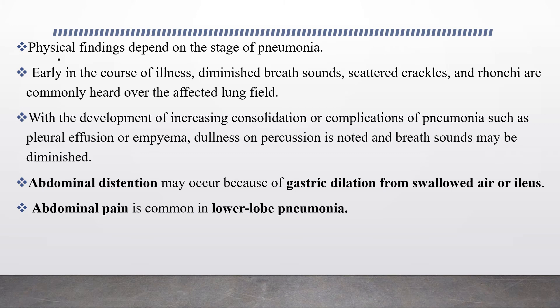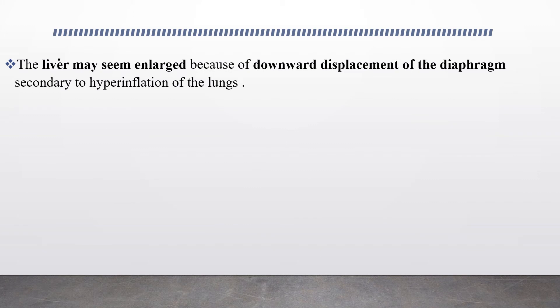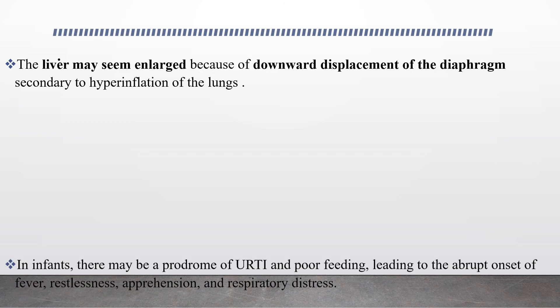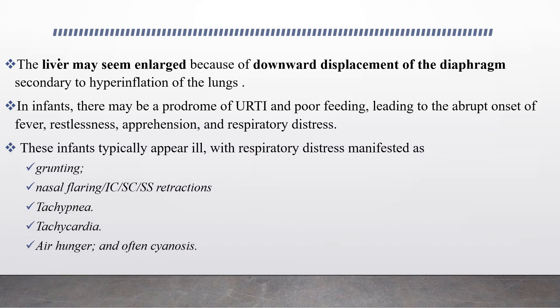Abdominal pain is also common in lower lobe pneumonia, and the liver might appear enlarged due to downward displacement of the diaphragm secondary to hyperinflation of the lungs. In infants, there may be a preceding upper respiratory tract infection and poor feeding, leading to abrupt onset of fever, restlessness, and respiratory distress. The infant typically appears ill with respiratory distress manifest as grunting, nasal flaring, intercostal, subcostal, and suprasternal retractions, tachypnea, tachycardia, and often cyanosis.